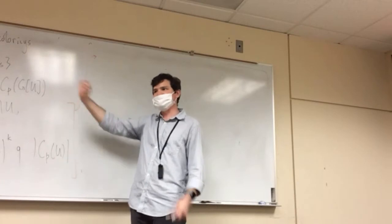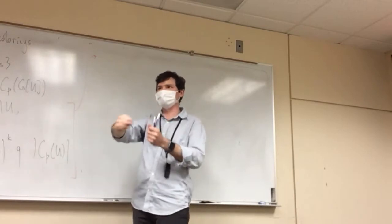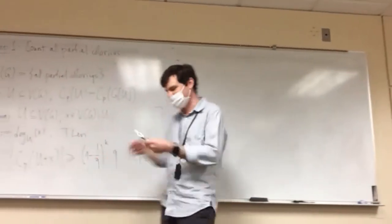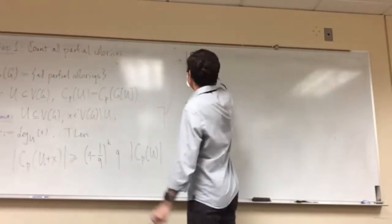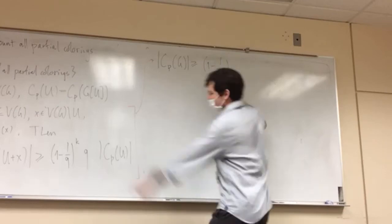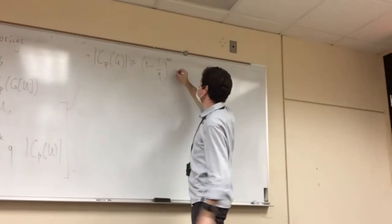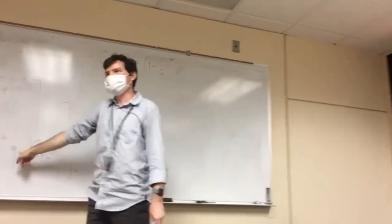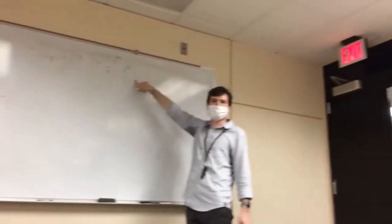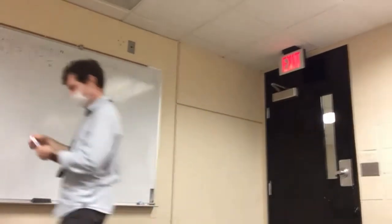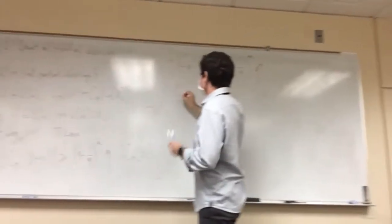Starting with U empty, there is one partial coloring (nothing is colored). Adding vertices one by one, each time we multiply by this factor. This implies that the total number of partial colorings of G is at least the product of all these (1 - 1/q)^{k_i} factors — which gives (1 - 1/q)^m — times q^n. So we get exactly a bound of the sort we want for partial colorings, though vertices can still be uncolored.